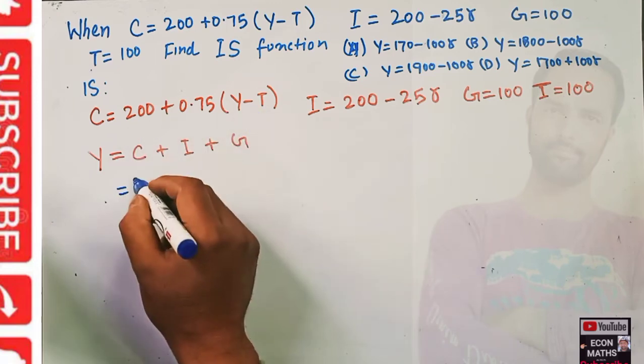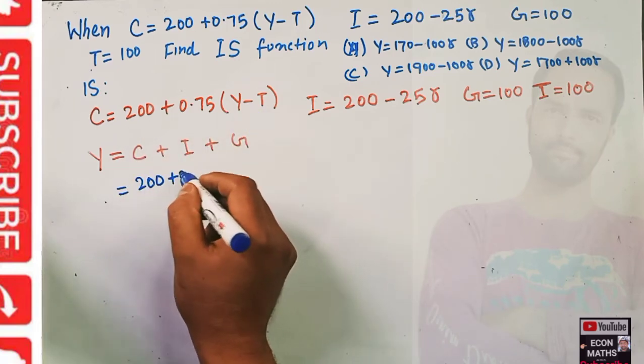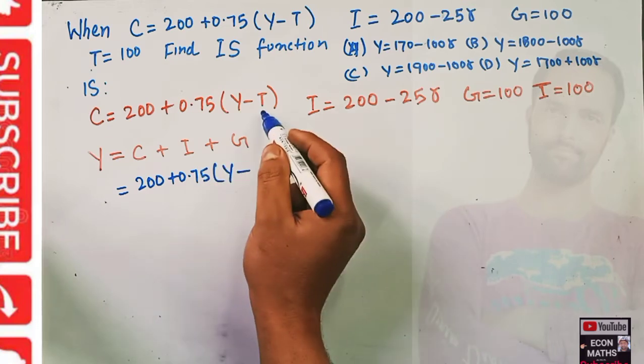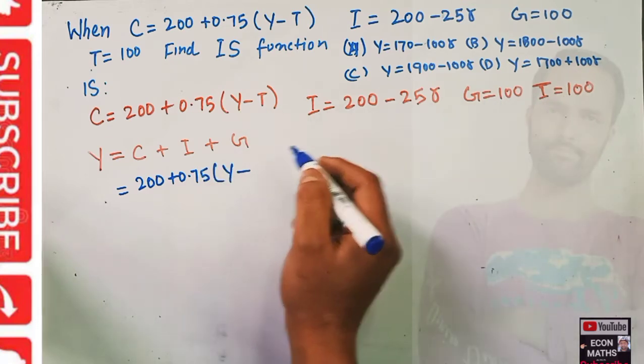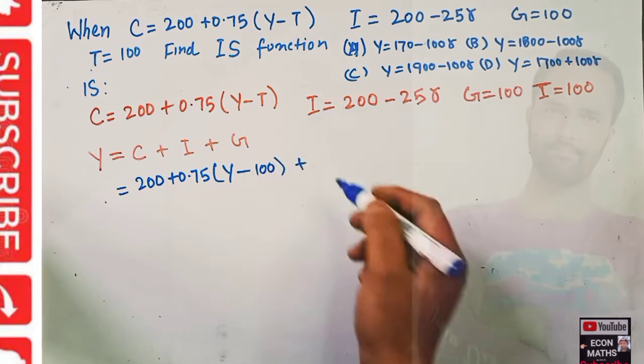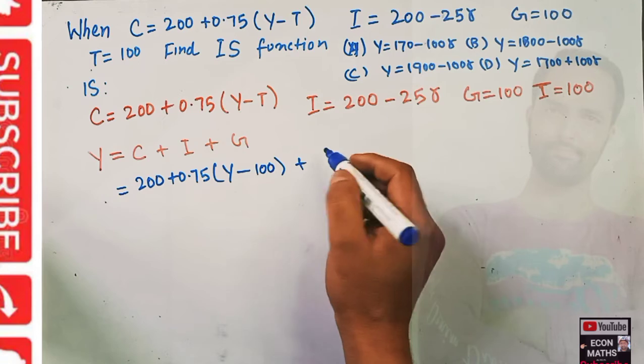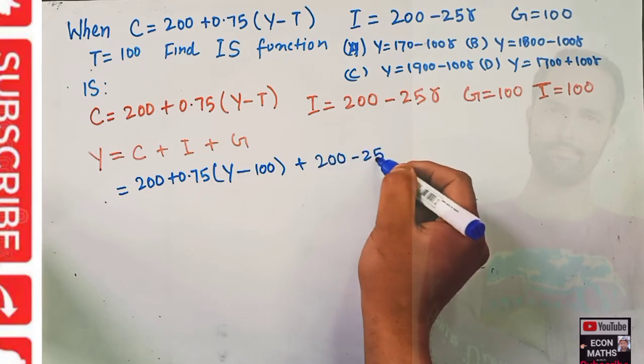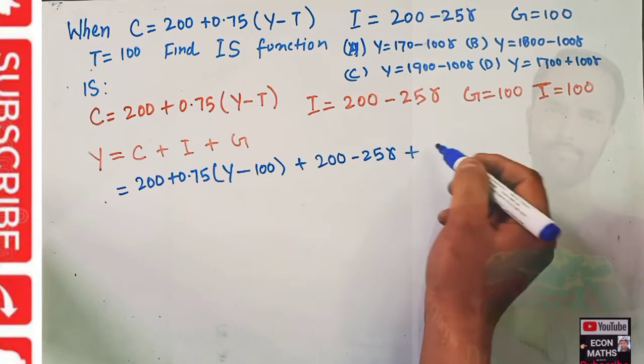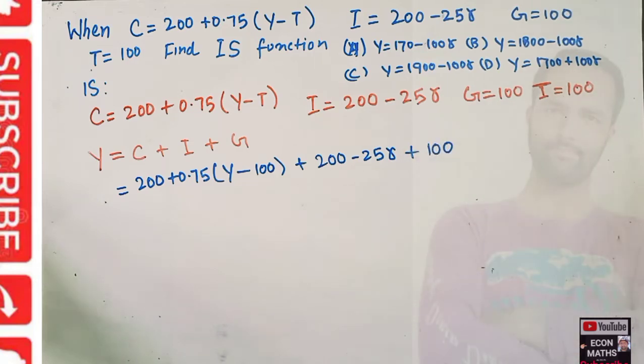Substituting the values: C = 200 + 0.75(Y - 100), plus investment which is 200 - 25r, plus government expenditure of 100.